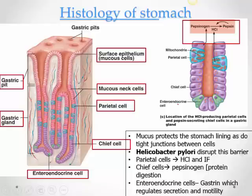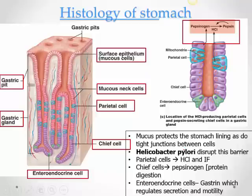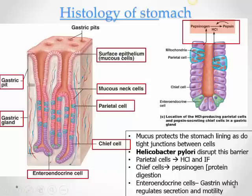Gastrin acts on the stomach muscle and stimulates chief and parietal cells to secrete. People with gastric ulcers are now treated with antibiotics to reduce Helicobacter pylori levels, once that diagnosis is confirmed. Stress can also cause ulceration by increasing cortisol and epinephrine, causing vasoconstriction and slight ischemia, and increasing gastric acid secretion.